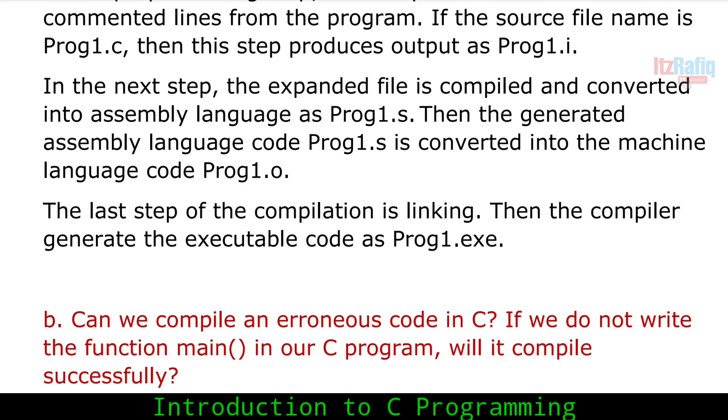In the next step, the expanded file is compiled and converted into assembly language as Prog1.s. Then the generated assembly language code Prog1.s is converted into machine language code Prog1.o. The last step of compilation is linking, then the compiler generates the executable code as Prog1.exe.